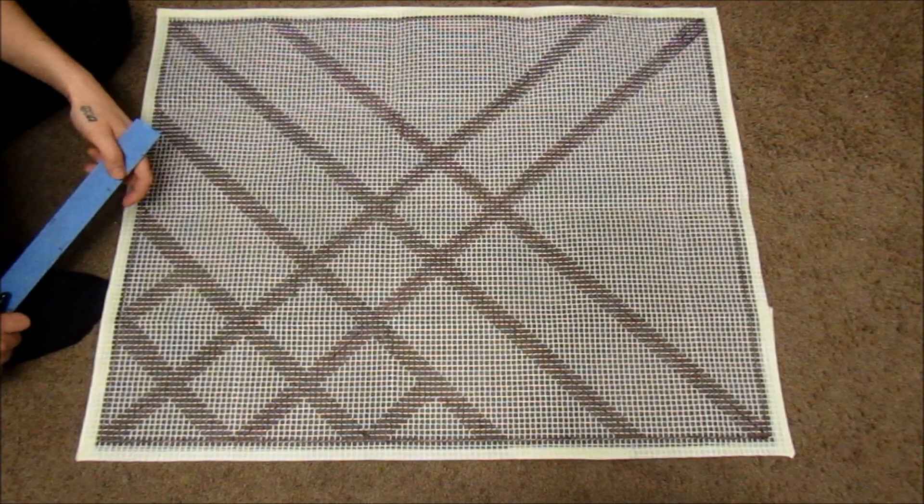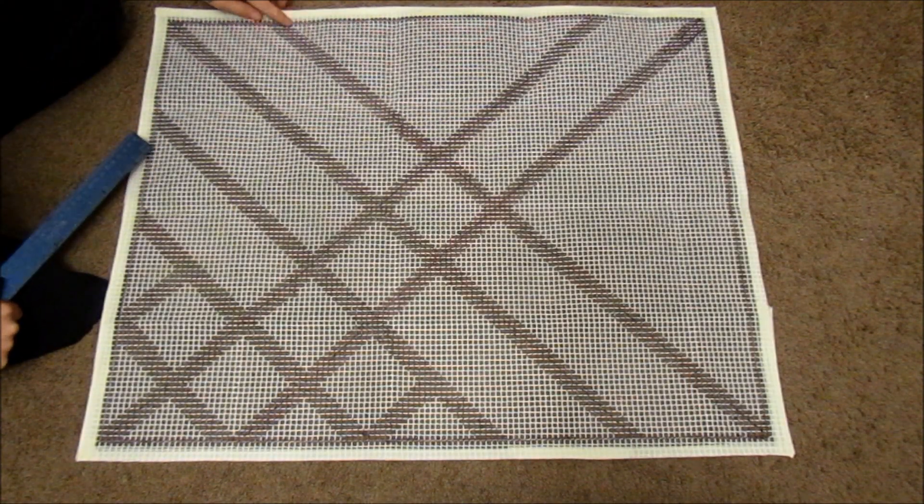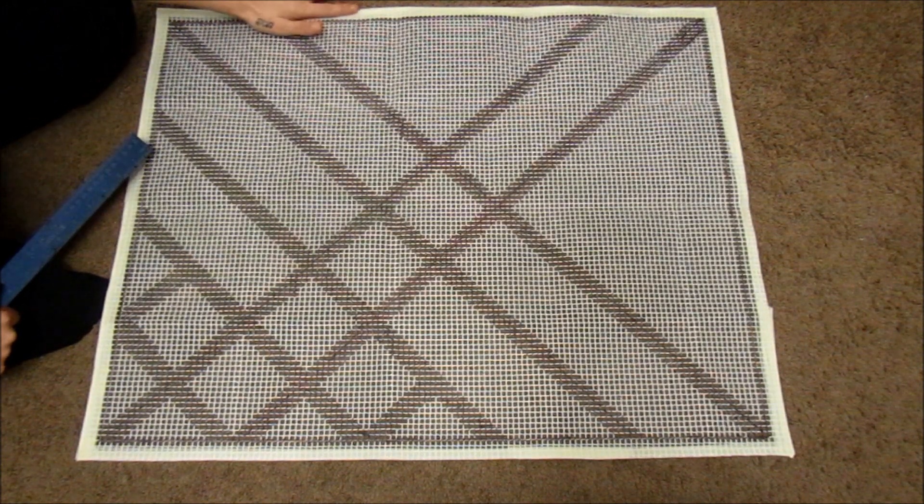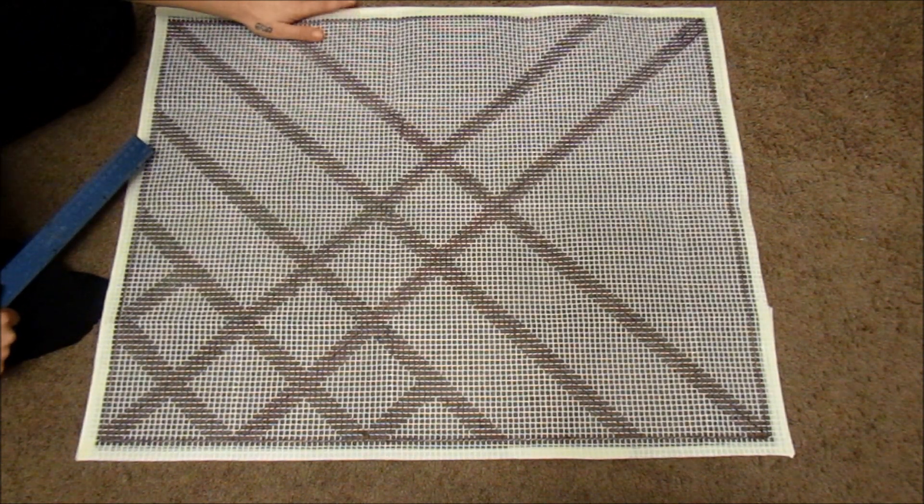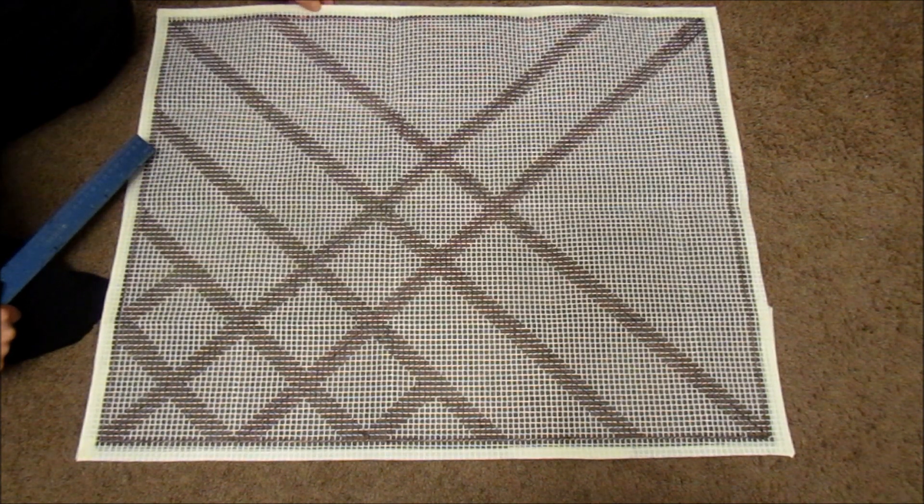So let's get into it. First things first, I counted three squares in on each side and drew a border so that I have enough to weave in on the bottom and then taped the edges so that it doesn't come undone.